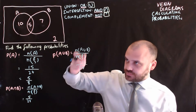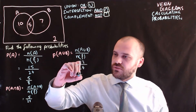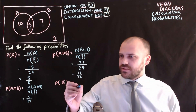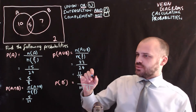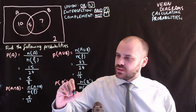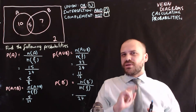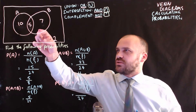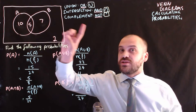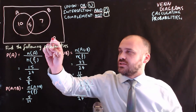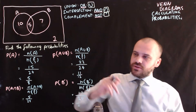So the probability of A union B is 22 over 24, which simplifies to 11 over 12. Now, the probability of not B. The size of the universal set is 24. Some people look at 7 and think that's the only part of B, but 5 is inside B as well. So the things not inside B are 10 and 2 — these two regions — so 12. That gives 12 over 24, which simplifies to one half.